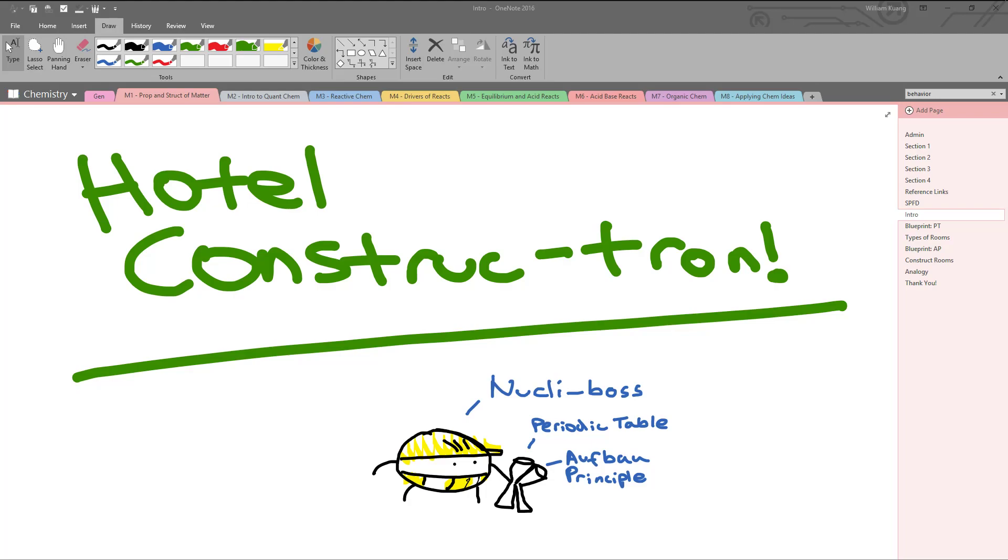I'll be using OneNote as well as some of my own illustrations to bring this concept across. So let's get to it. The name of the game is Hotel Constructron. You're the nucleus tasked with creating some hotels for electrons to live in. Now as the construction manager, or the nuclei boss, you have two blueprints in your hand: the periodic table and the Aufbau principle.